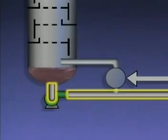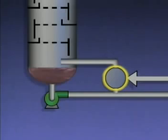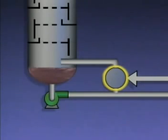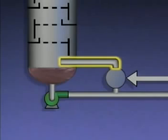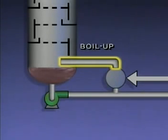Some of this liquid is drawn off as the bottoms product, and some of it is routed to a reboiler connected to the bottom of the tower. The reboiler is usually a heat exchanger designed to vaporize the lighter components remaining in the liquid from the bottom of the tower. Vapors from the reboiler — or in some cases a mixture of vapors and liquid — re-enter the tower, then rise up in the tower. These vapors and the heat they contain are often referred to as boil-up.